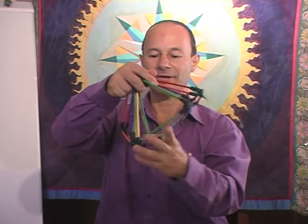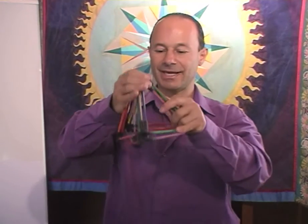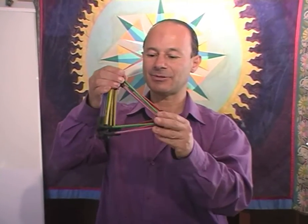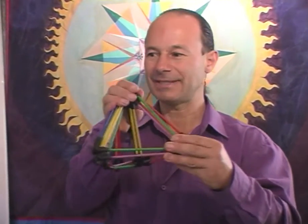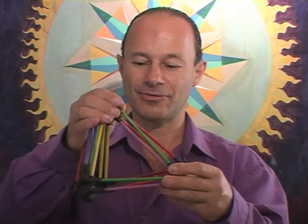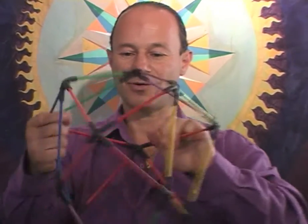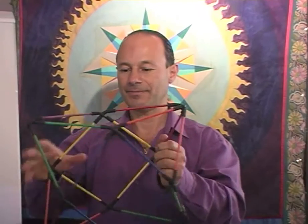And if we compress this again, we actually get the omni-stable tetrahedron, the basic building block of all the universe. And when we let go, it forms the jitterbug.